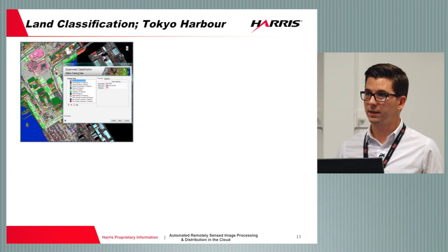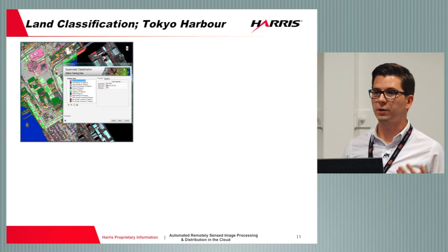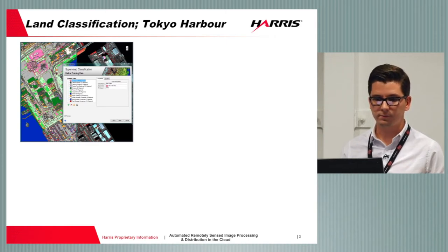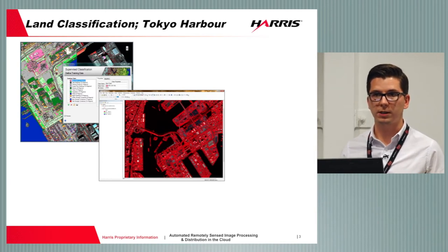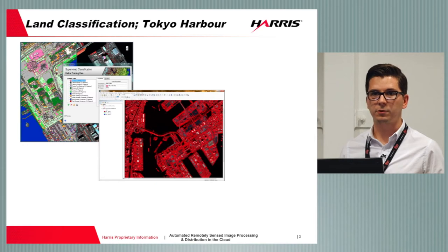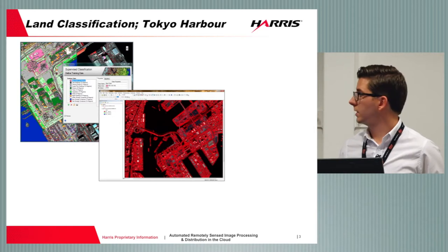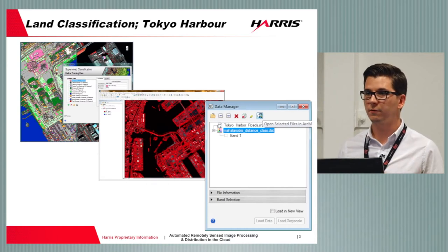Another very common example is land classification - how is land actually being used within an image? I have an image of Tokyo harbour and I'm interested in what pieces of information make up this image: where are the roads, the components of the harbour, the deep water, shallow water, the buildings. I can run that through our land classification workflow, creating a shapefile which is most likely to be my product to export to customers for their GIS analysis.